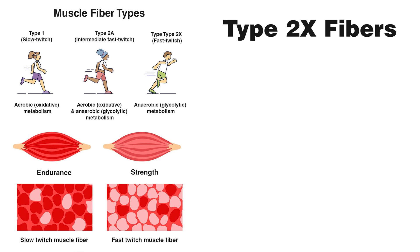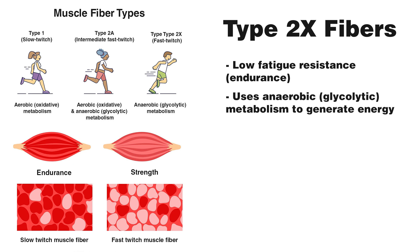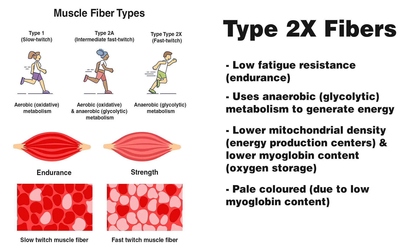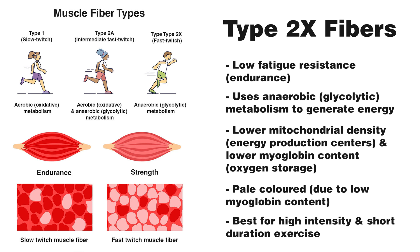Type 2x fibers are purely fast twitch fibers designed for quick and powerful bursts of activity. They rely predominantly on anaerobic glycolytic metabolism, using glucose as their primary energy source. They are generally less abundant within the muscle, contain fewer mitochondria and far less myoglobin, making them much more pale in color. While they generate really high force outputs, they also fatigue very quickly. They're primarily activated during high intensity, short duration activities like sprinting or Olympic weightlifting where rapid and forceful contractions are critical.